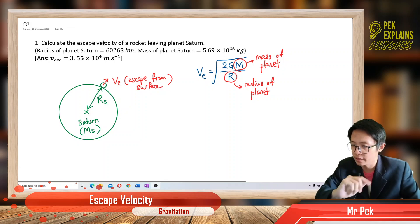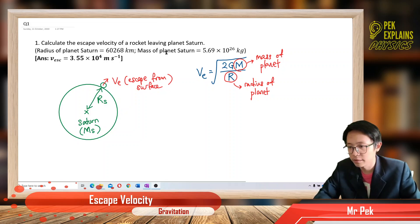So want to find the escape velocity of this rocket, you want to leave the planet Saturn. This is the formula for escape velocity, which is equal to square root 2GM over R. The M is the mass of the planet, the R is the radius of that planet.